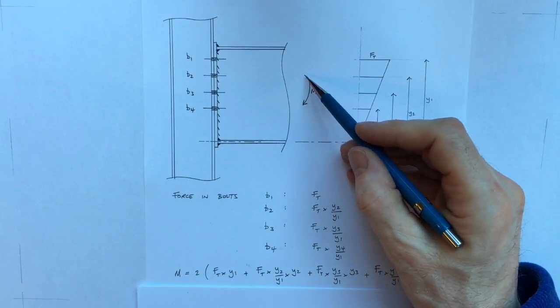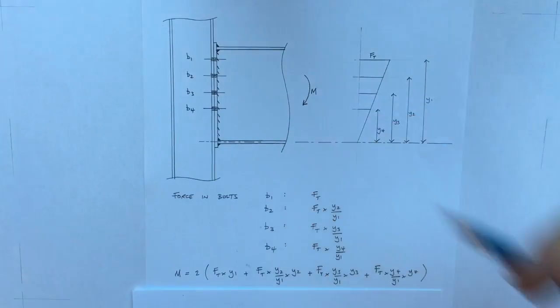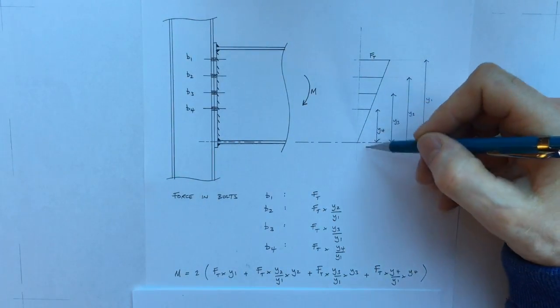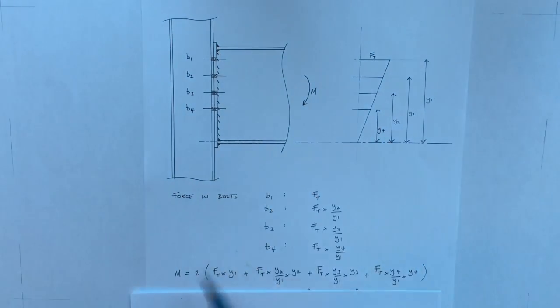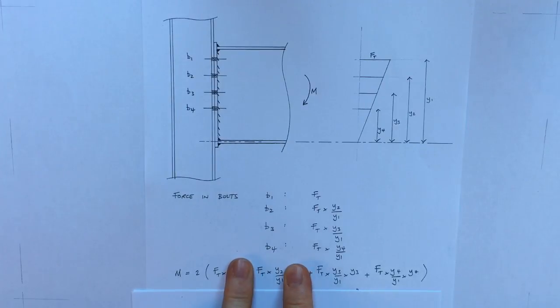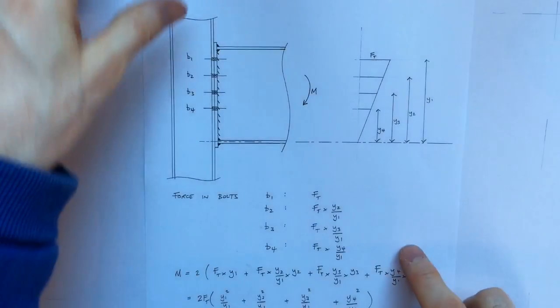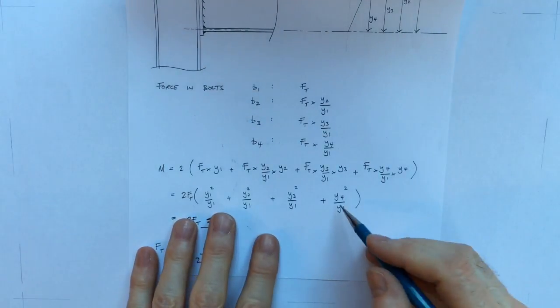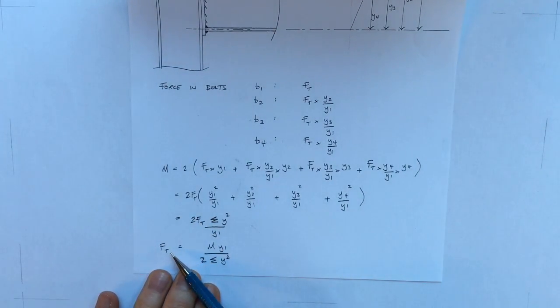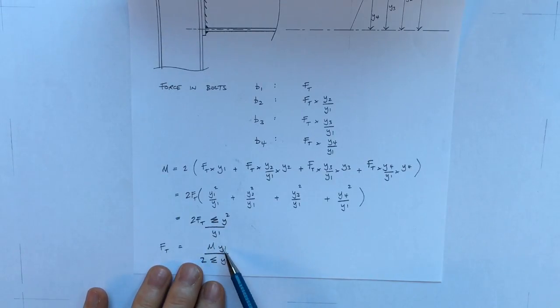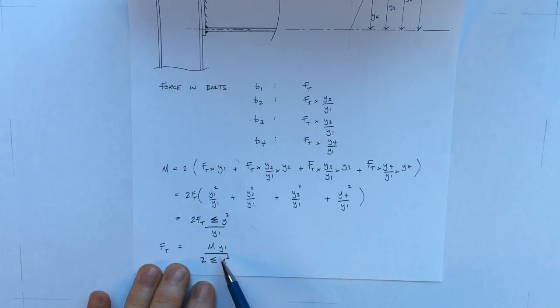The applied bending moment is going to be exactly equal to each of these forces times each of these distances. So the bending moment equals two times the force in the first bolt times its distance to the point of rotation plus the force in the second bolt times its distance plus the force in the third bolt times its distance and so on. Eventually with a little sleight of hand of algebra you get to the equation that the force in any bolt is the bending moment times the bolt's distance to the point of rotation divided by the sum of all the distances to all the bolts squared.